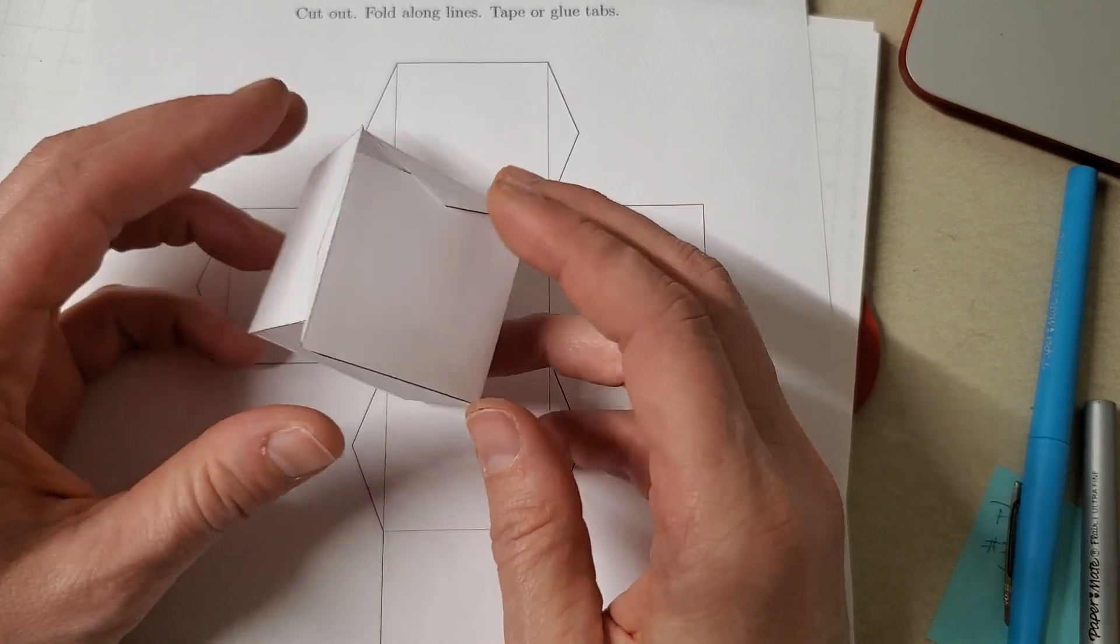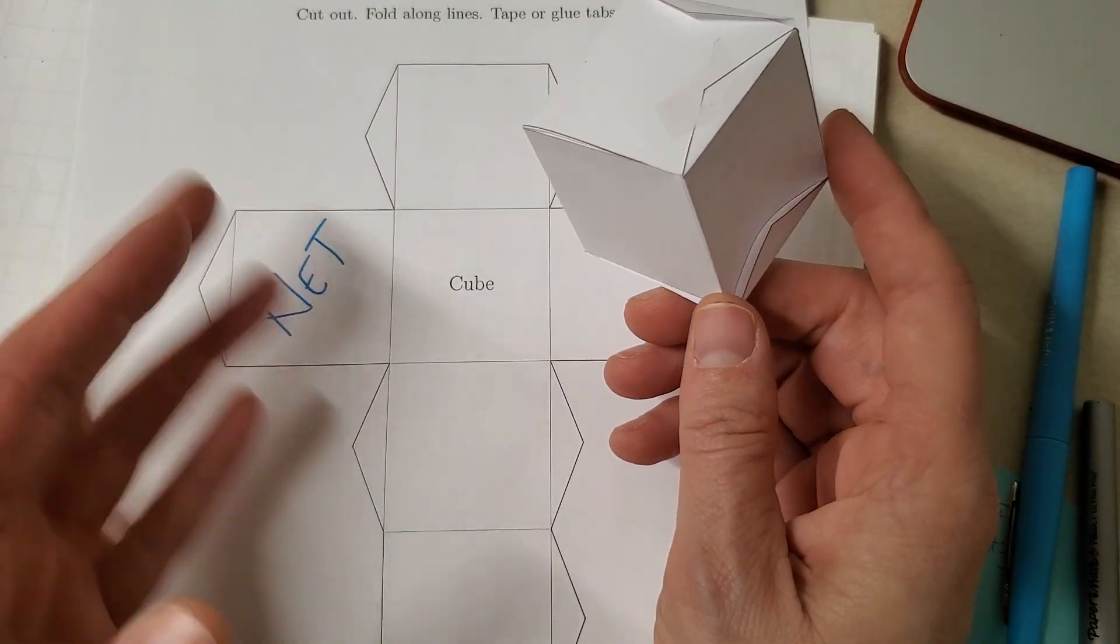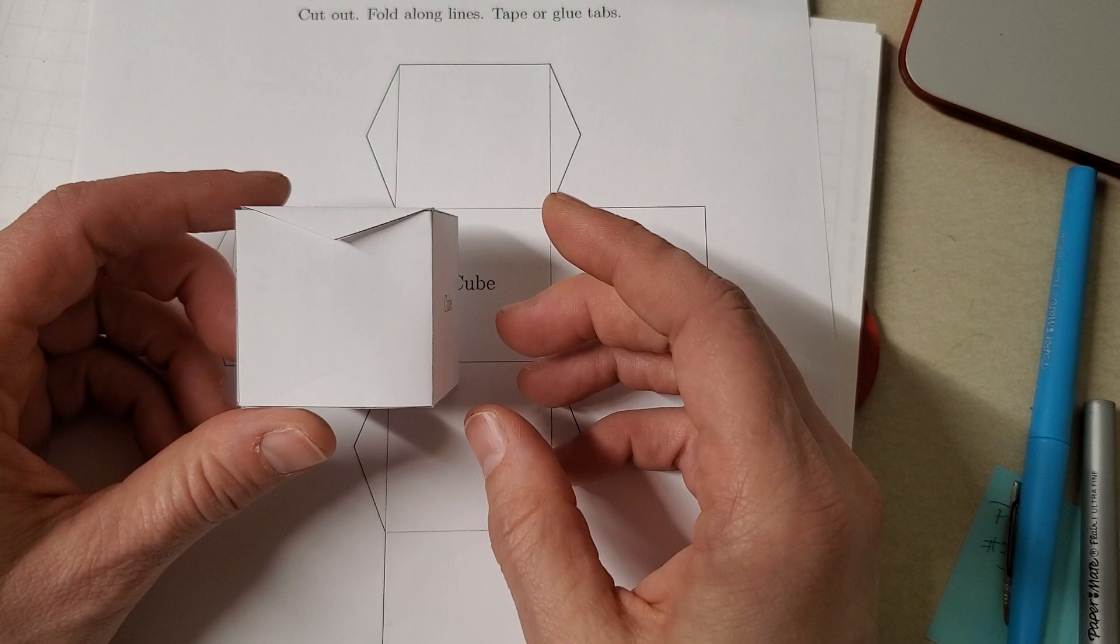And then we'll do work this week with nets about how to draw them, how to look at one and try to piece it together in your mind to know what shape it is in real life. Okay?